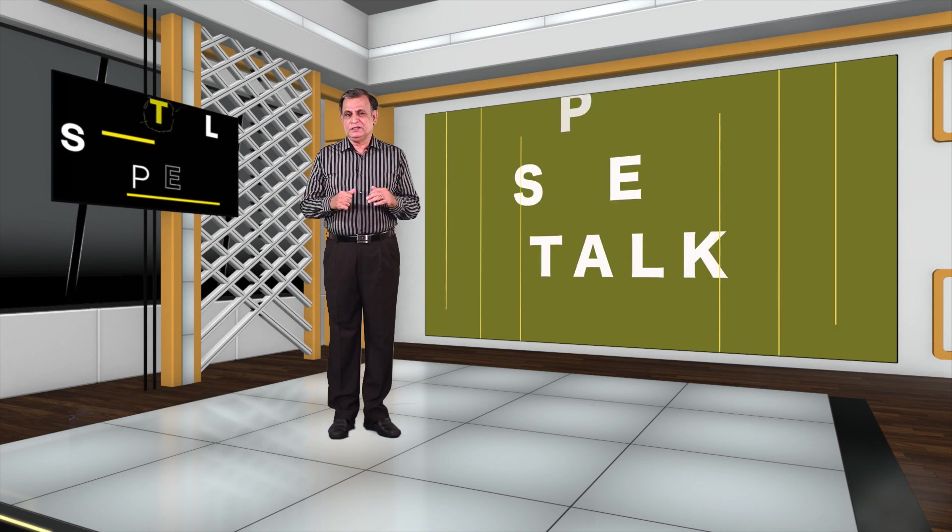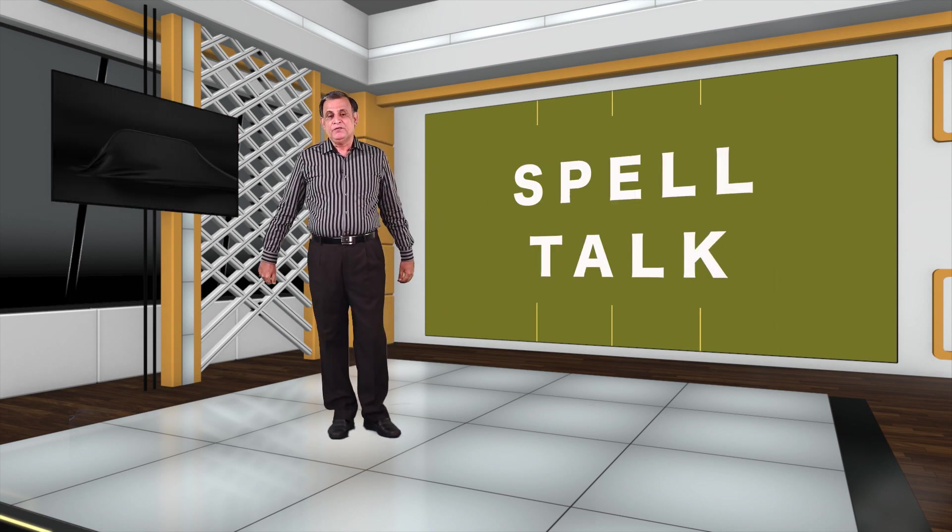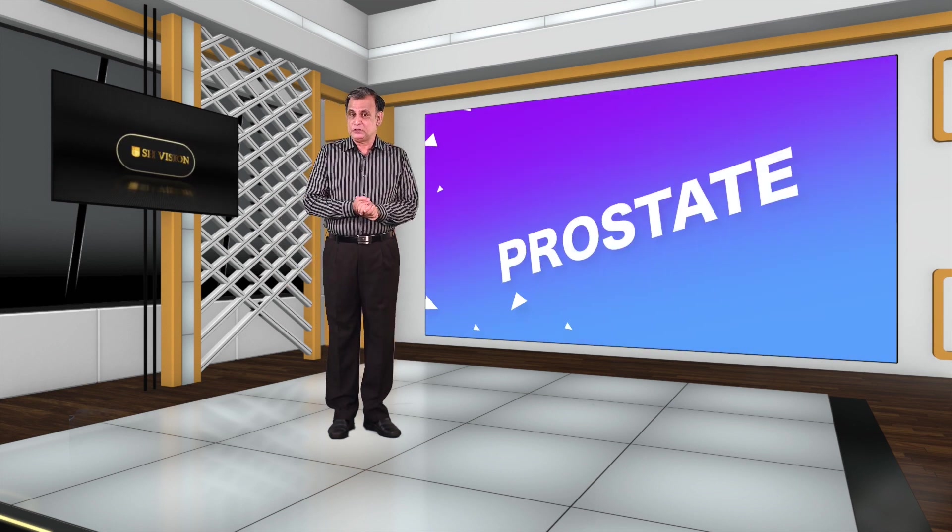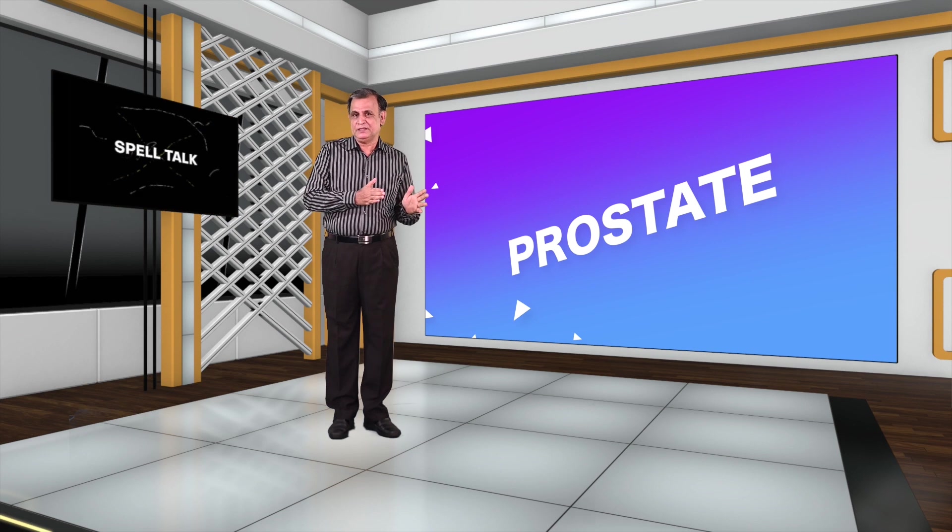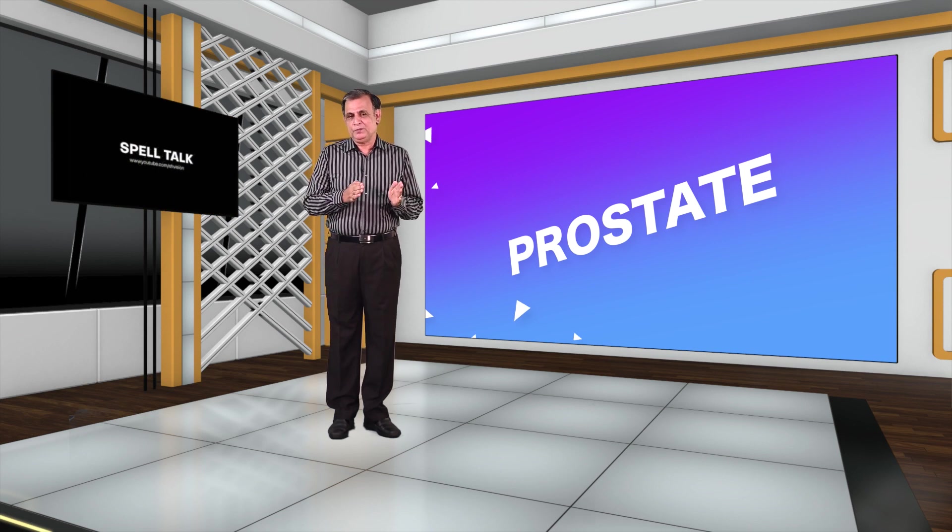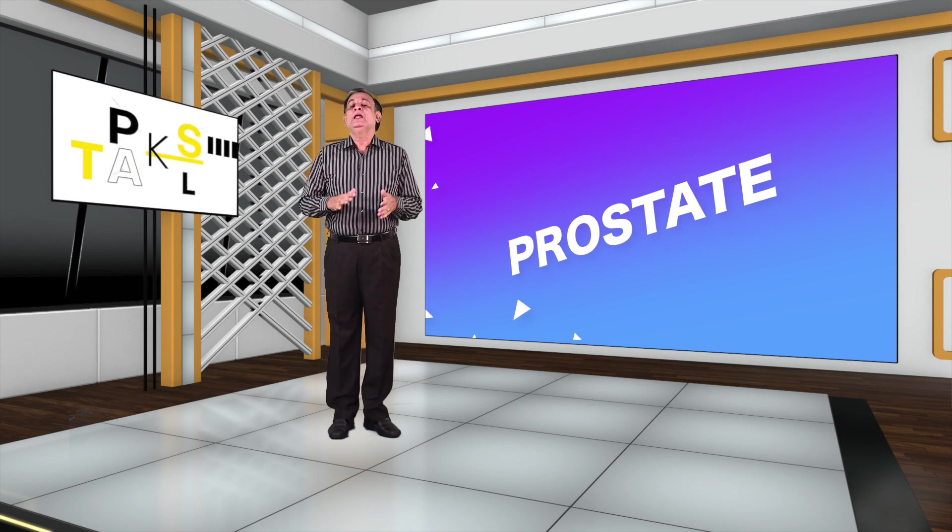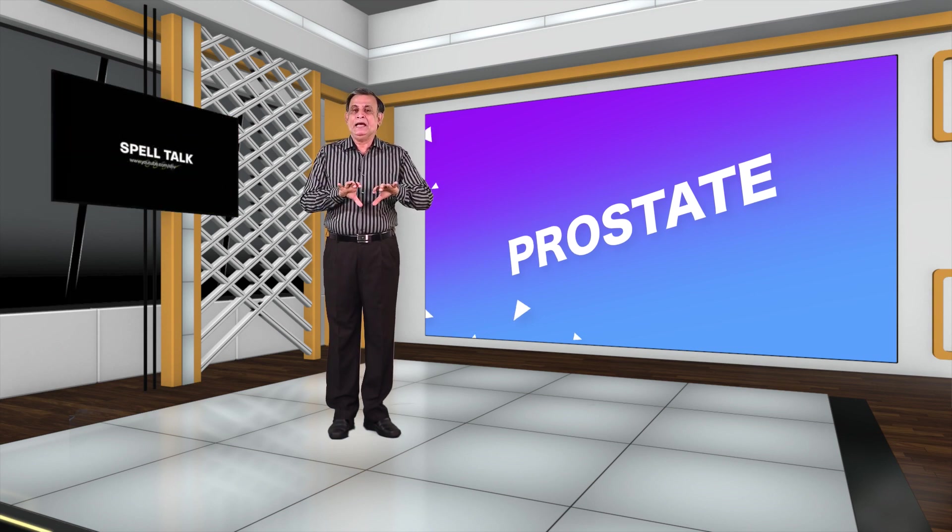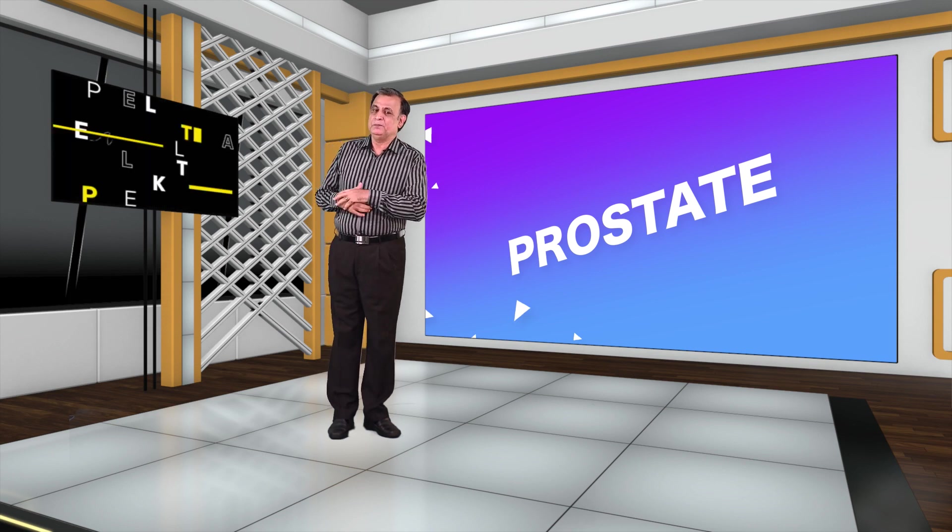Now let us consider another pair of words: prostate and prostrate. First, prostate. Some prefer the shorter version prostate, some prefer prostate gland. Prostate means a large gland just above the neck of the bladder.